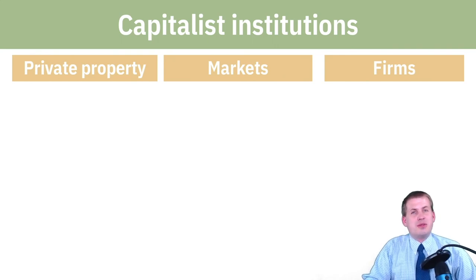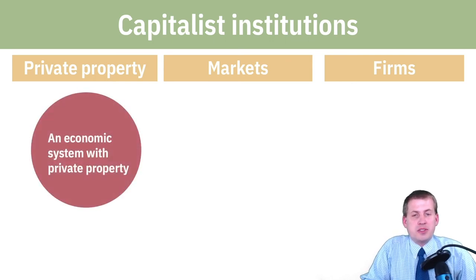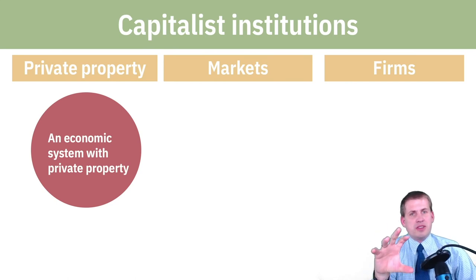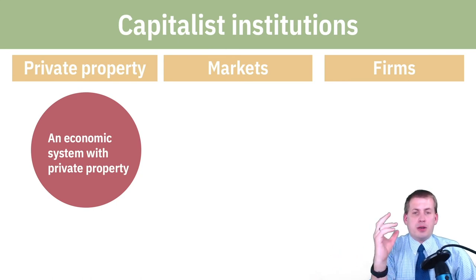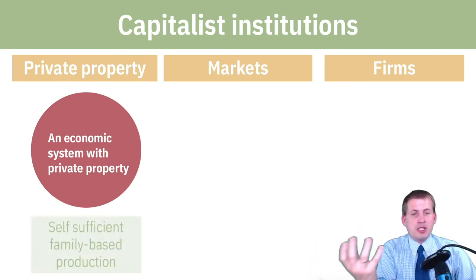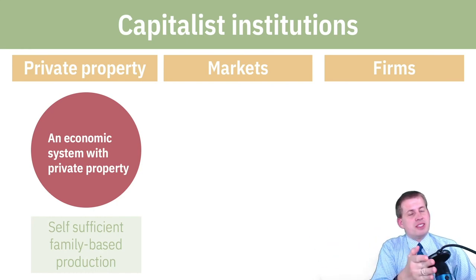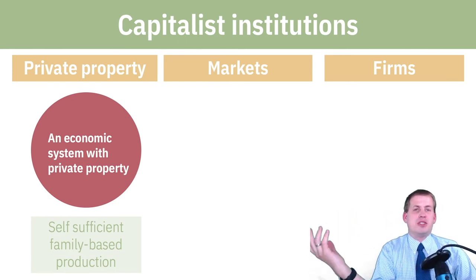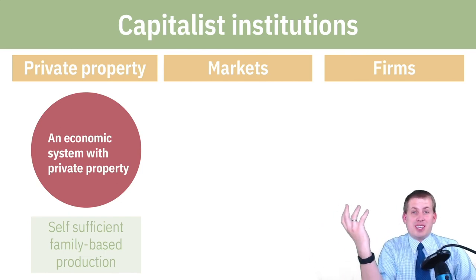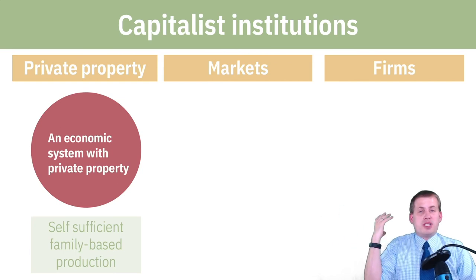So the three capitalist institutions — private property, markets, and firms — all interact and nest inside each other. The CORE book has a neat way of visualizing this as layers. Private property is the foundation: the only way you can buy and sell is if you have rights to something. Think of it as early family-based production — like Little House on the Prairie — where you're self-sufficient on a homestead, producing your own butter, cheese, milk, and wheat, with no markets and no companies.